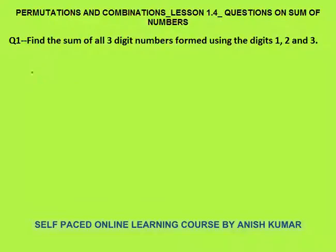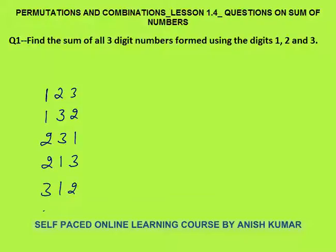First let me manually calculate how many numbers will be formed. Factorial 3, that is 6 numbers: 123, 132, 213, 231, 312, 321. These will be the 6 numbers formed using 1, 2 and 3.